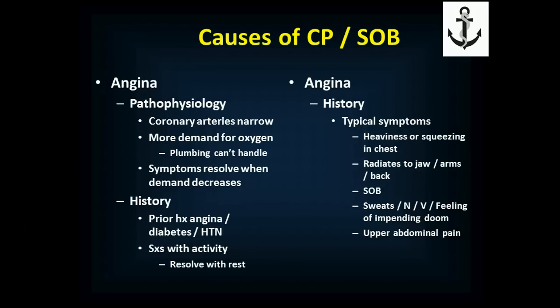Let's talk about things that can cause chest pain and shortness of breath. In angina, your coronary arteries narrow — they build plaques along the walls, just like old pipes building up calcium deposits. If you put too much demand on them, they can't supply enough blood. The coronary vessels that supply the heart itself narrow down; normally the trickle that flows through is enough, but when the patient exerts themselves, there's more demand than supply, and they get chest pain or discomfort. Decreasing oxygen demand will make symptoms go away.